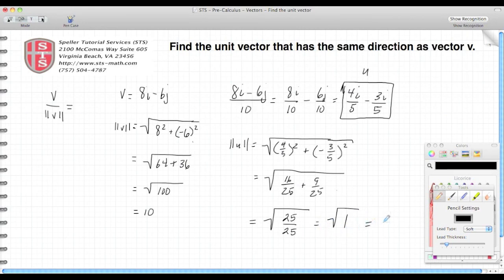25 divided by 25 is 1, and the square root of 1 is 1. So I see that my magnitude of my unit vector is 1, so I know that my work is correct.